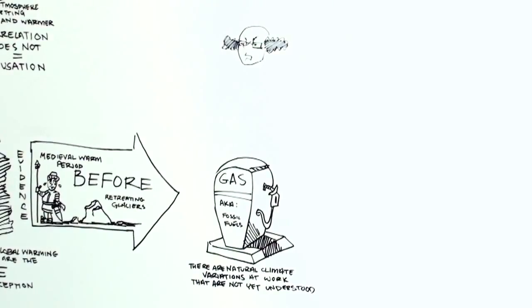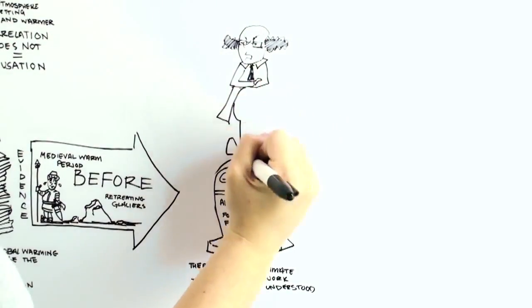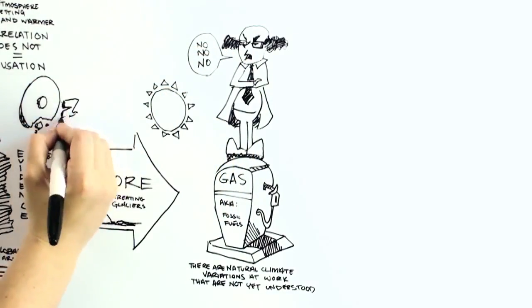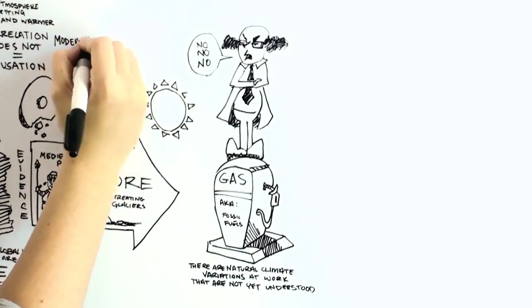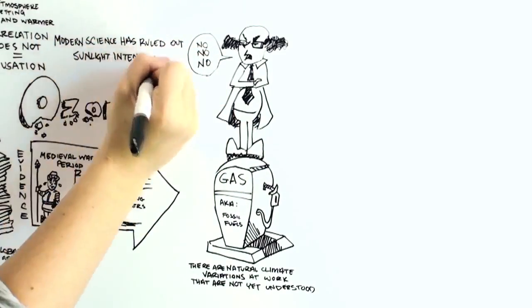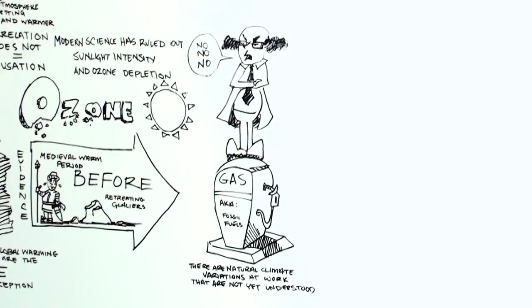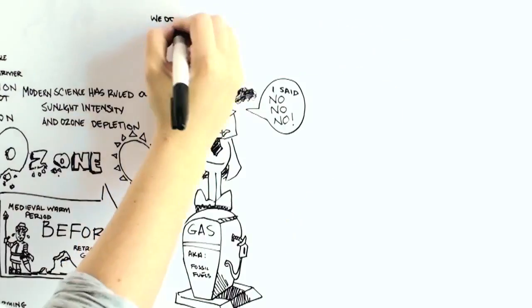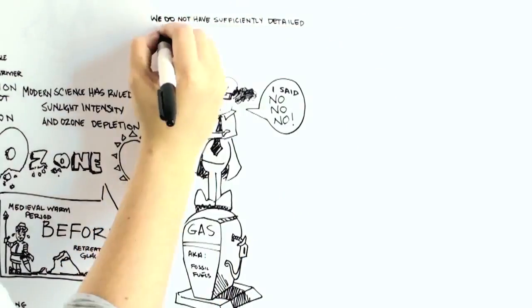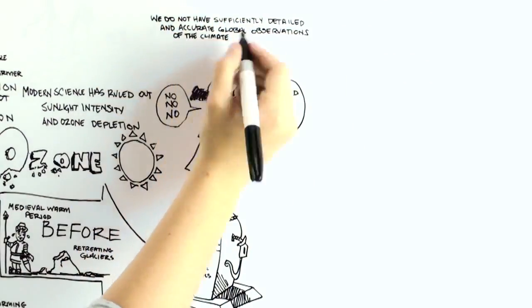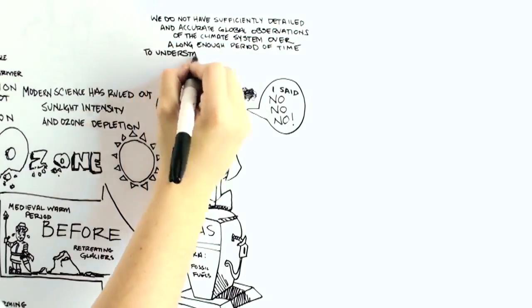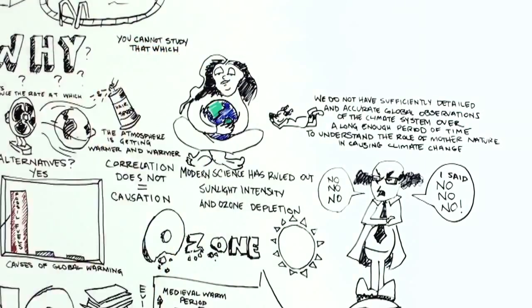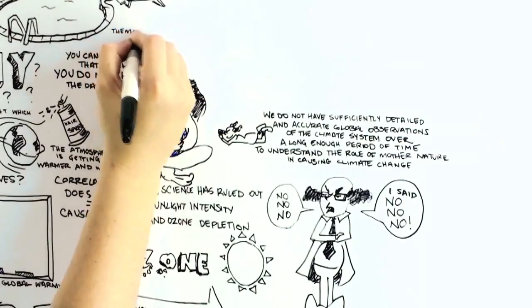While it is true that modern science has ruled out the most obvious direct influences on the climate system, like changes in sunlight intensity or ozone depletion, scientists have essentially ignored natural indirect sources of climate change generated by the climate system itself. The reason why is that we have not sufficiently detailed and accurate global observations of the climate system over a long enough period of time to understand the role of Mother Nature in causing climate change. You cannot study that which you do not have the data to study.